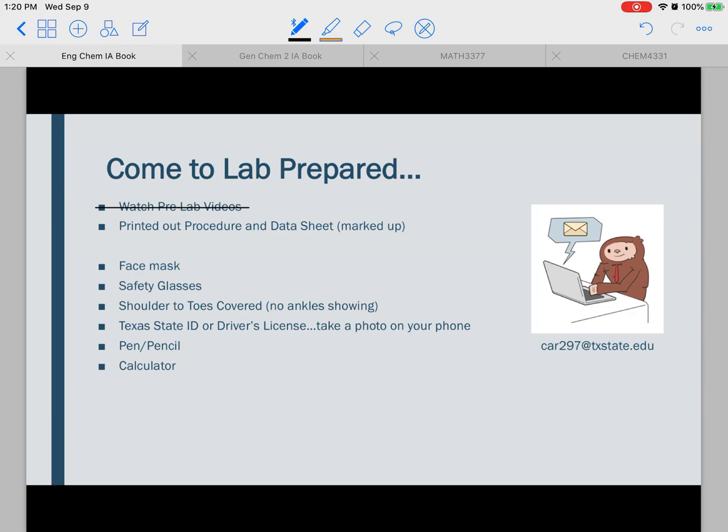Now, when it's time for you to actually come into lab, you need to make sure that you have a face mask, and that you have your safety glasses, that you're wearing appropriate clothing. Please make sure you're wearing long socks. Also, make sure that you have your school ID or your driver's license. Go ahead and take your phone and take a picture of one of those. That way, it will always be on your phone. So even if you forget your wallet at home, you'll still have a picture of it. Because if you come to lab and you have to check something out, but you don't have your ID, you're not going to be able to do your lab for the day. So go ahead and just take a picture of it. That way, we don't have to worry about that. Also, make sure you bring a pen and a calculator.